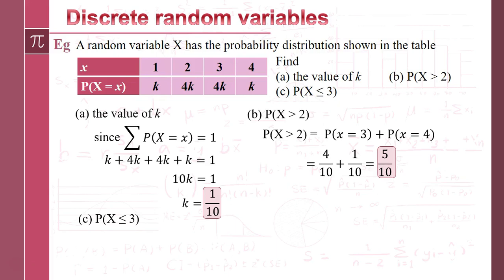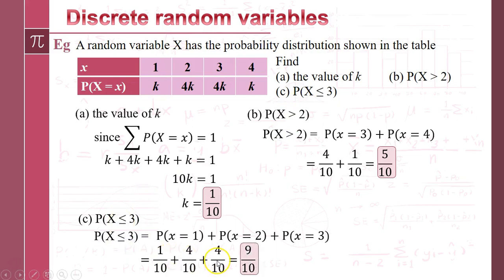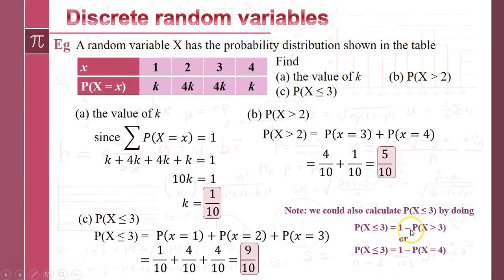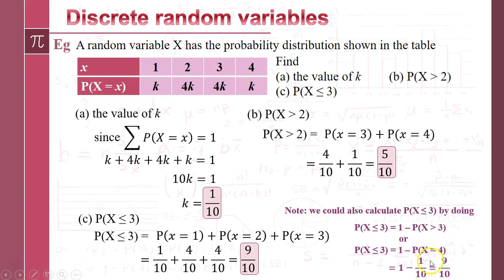Part C: probability that x is less than or equal to 3. Because we've got equal to or less than, 3 is included. Adding those probabilities together: 1/10 plus 4/10 plus 4/10, we get 9/10. Alternatively, we could do 1 minus the probability that x is greater than 3, which is just 1 minus the probability that x equals 4. You get used to flipping around using this 1-minus approach, but be careful with equal-to-or-less-than — in this context, x strictly greater than 3 is the same as x equals 4. So 1 minus 1/10 gives us 9/10.